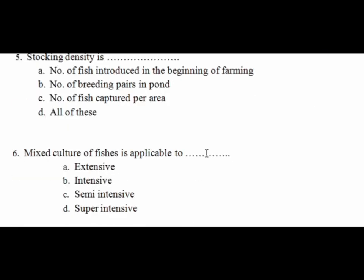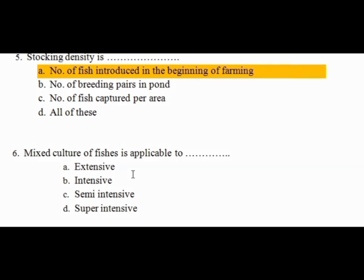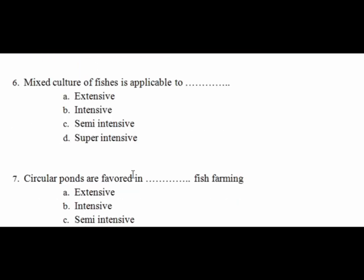Question 5: Stocking density is defined as — the options are: Option A, the number of fish introduced at the beginning of farming; Option B, the number of breeding pairs; Option C, the number of fish captured. Stocking density refers to the number of fish introduced at the beginning of the farming cycle. It is a straightforward question.